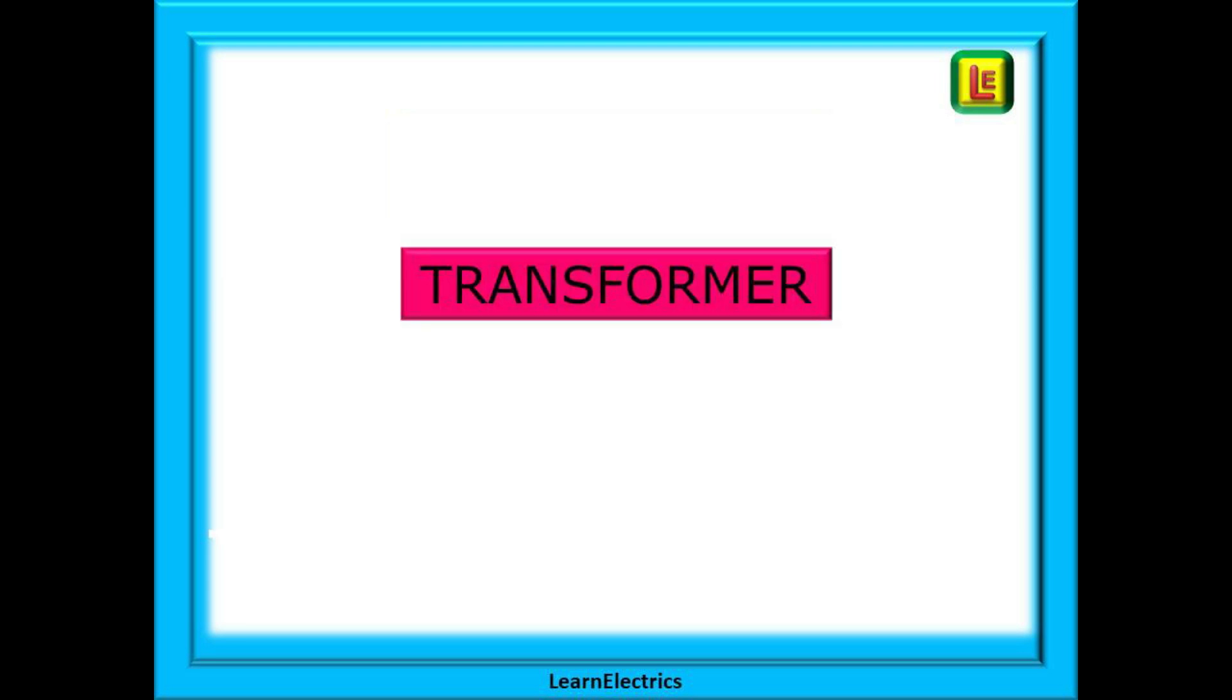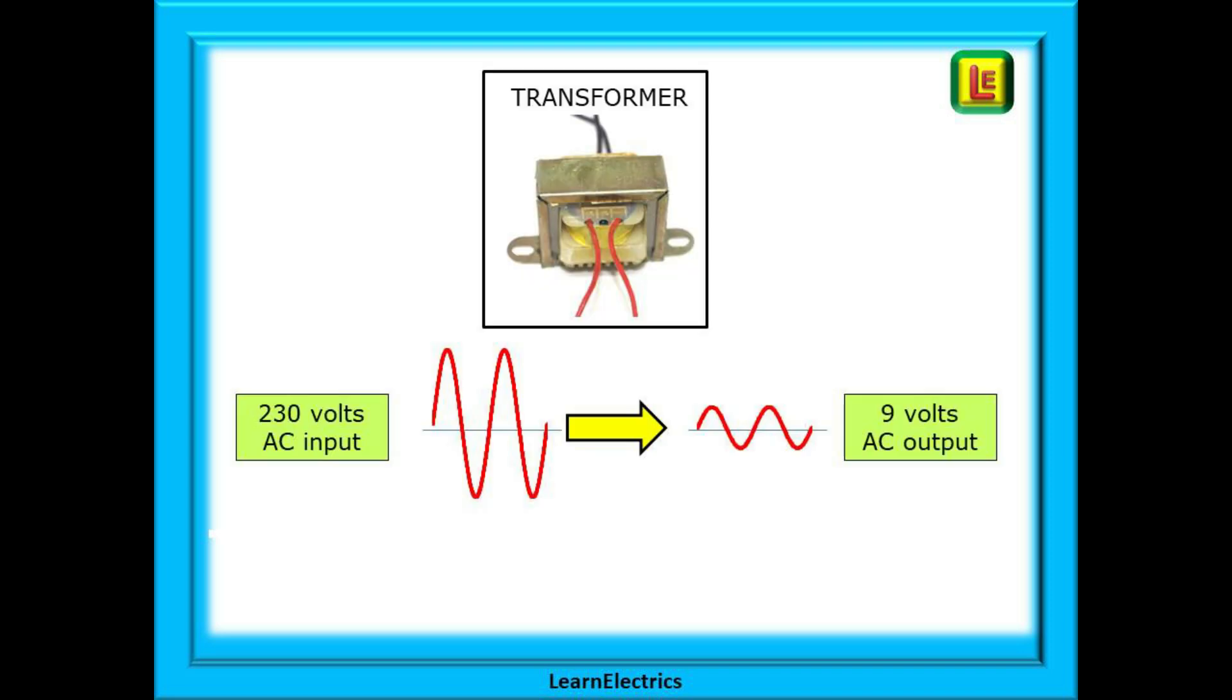So let's go back to the transformer. In this example our basic transformer will convert 230 volts AC into 9 volts AC. Transformers work on alternating current and so the input and output are both alternating currents.